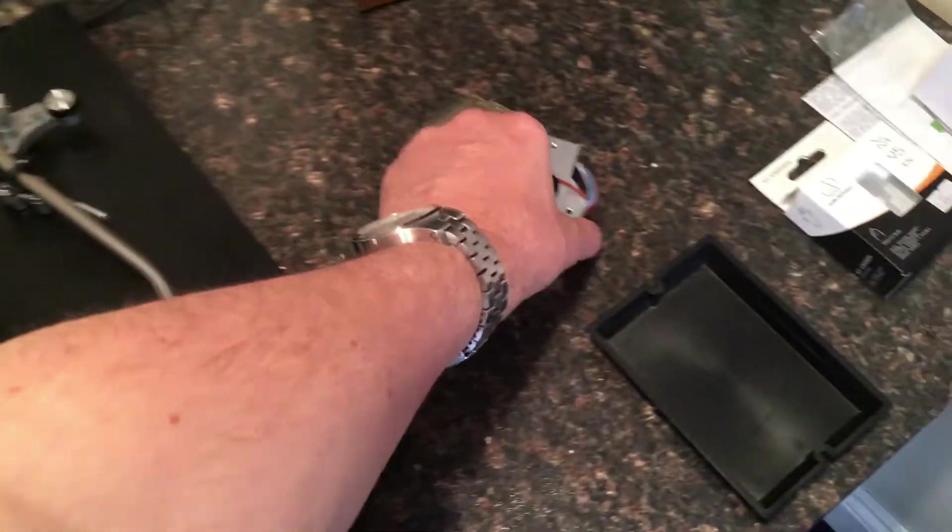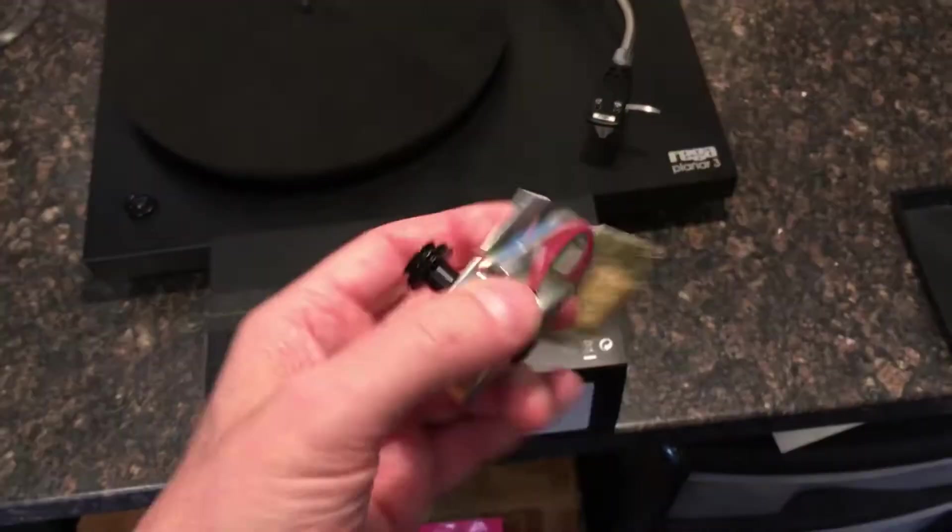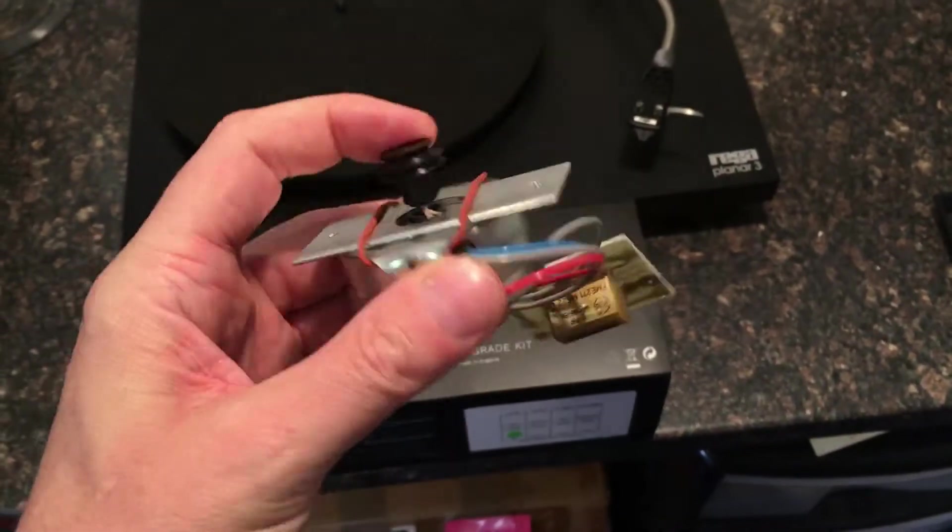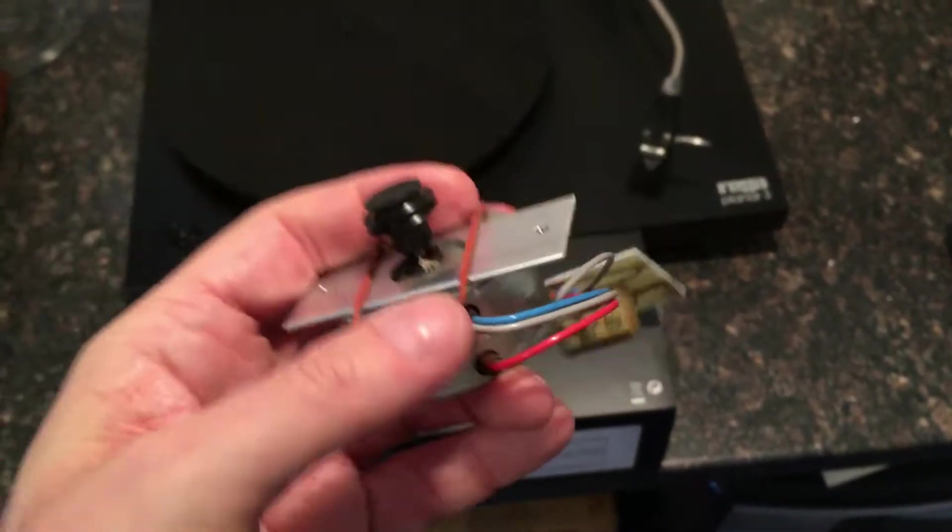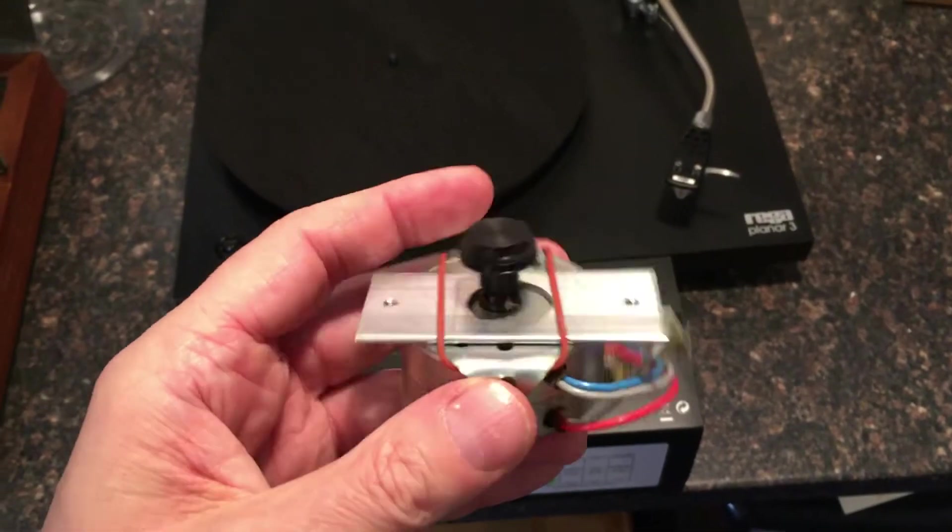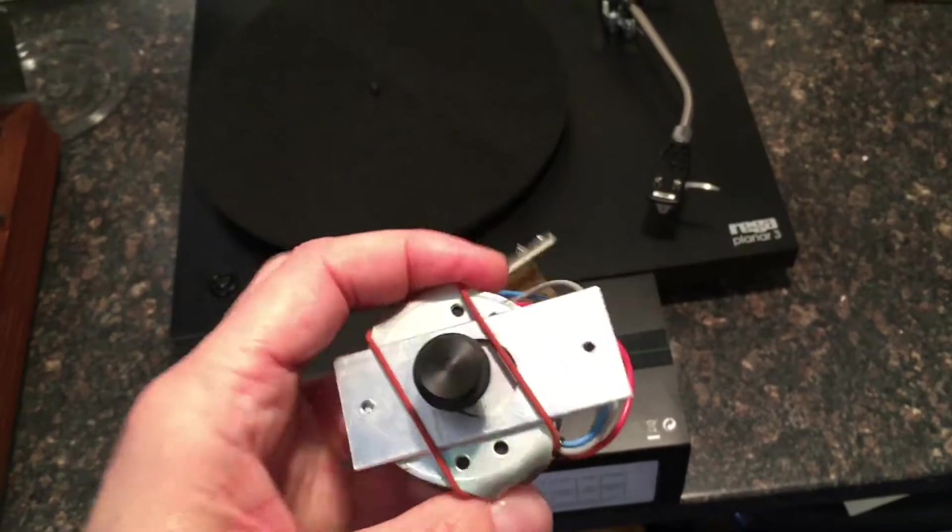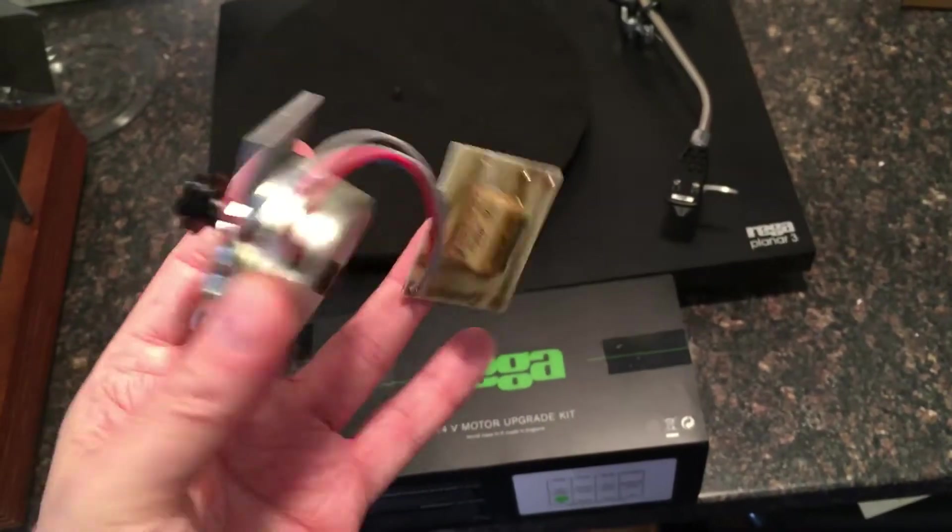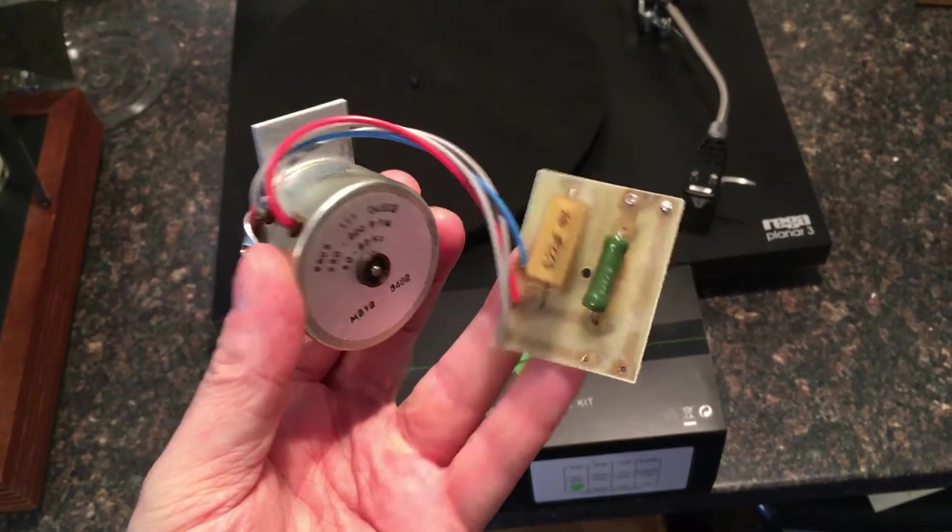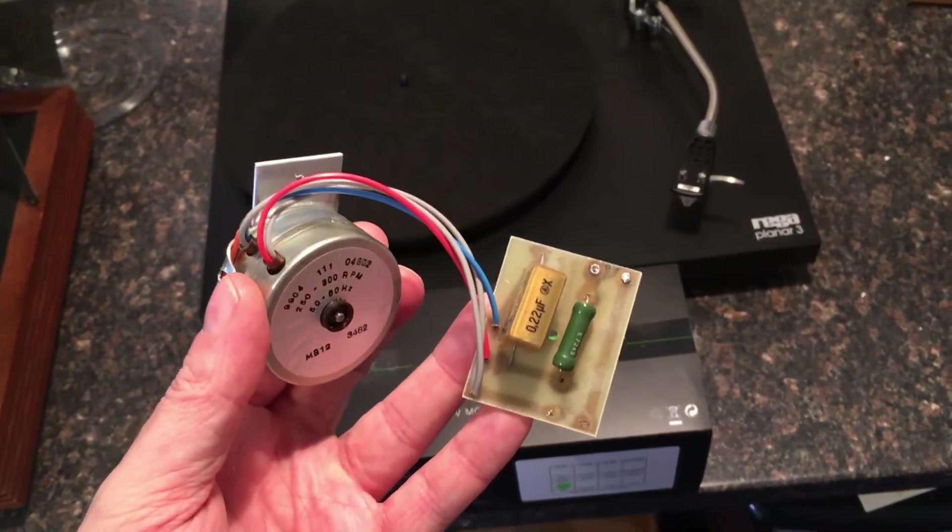What we've taken out is the entire motor including suspension - for some reason this has got a red suspension band, some dodgy eBay thing probably. Supply board - all this is the mains voltage motor and mains supply board, all that comes out.